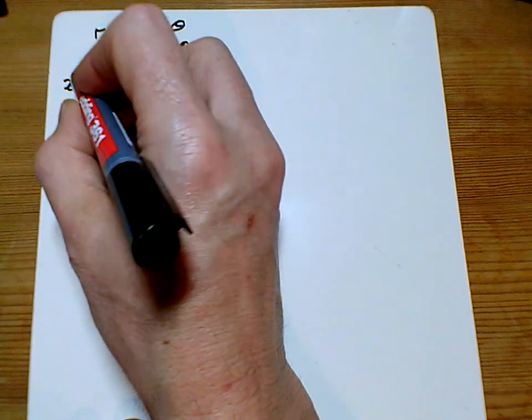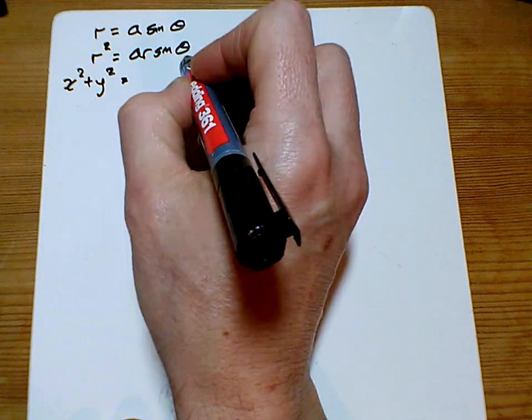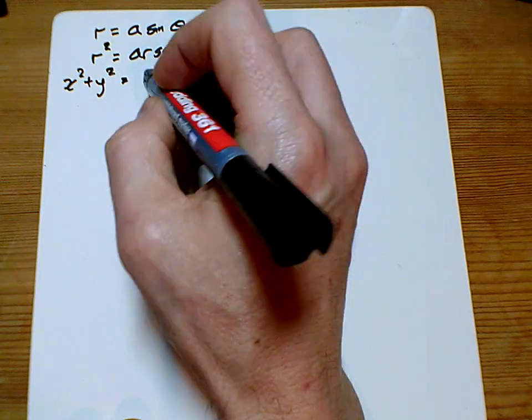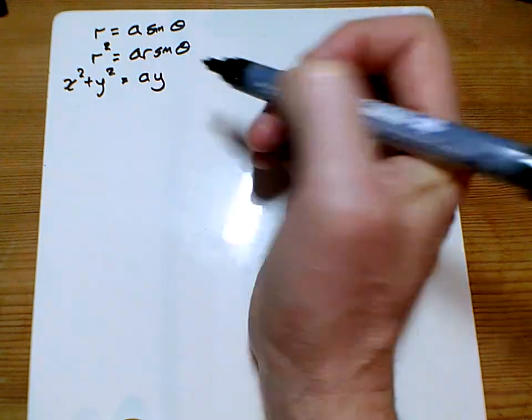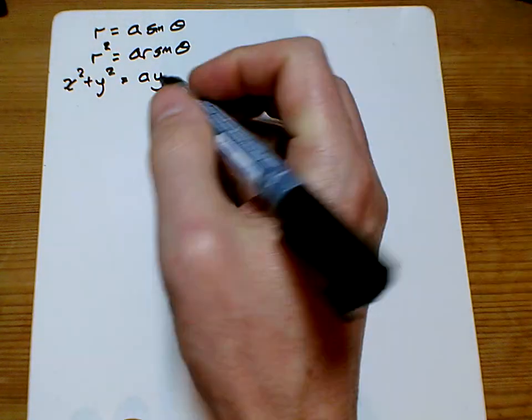Now R squared, of course, is X squared plus Y squared, and R sine theta, well, that was simply Y. So we've got X squared plus Y squared equals A Y.